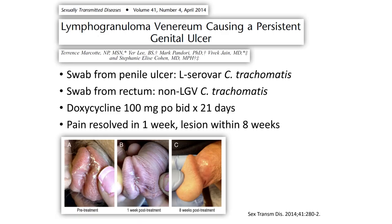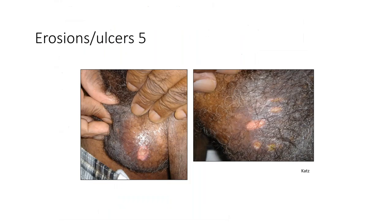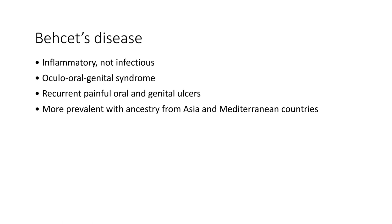A reminder that LGV is around — a case from San Francisco demonstrating LGV, most commonly causing proctocolitis in MSM these days, but the classic LGV genital ulcer disease still occurs. Also: painful ulcers on the scrotum can represent Behçet's disease — a non-infectious inflammatory condition, part of an ocular-oral-genital syndrome with recurrent painful oral and genital ulcers. More prevalent in people of Asian and Mediterranean ancestry.